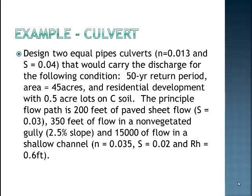A really good example is taking a design of two equal culverts. I would like you to consider that you are doing a 50 year design for a 45 acre watershed. The residential development has 0.5 acre lots on C soil. The principal flow path is 200 feet of paved sheet flow with a slope of 0.03. We have 300 feet of flow in a non-vegetated gully and 15,000 feet of flow in a shallow channel. I want to calculate the size of these culverts. Think about this. You first need to calculate the flow rate. We'll do this using the rational method. I'm giving you information to calculate travel time so we can find the intensity. And finally, you're given information about the culvert so you can actually design the diameter of the culvert. We will talk about this in class and do this as a class when we meet next.